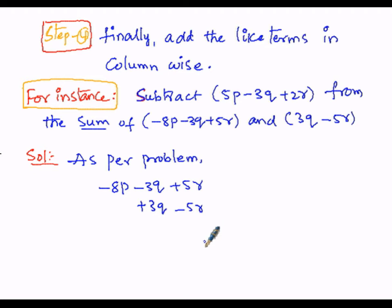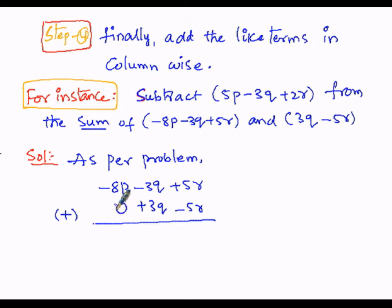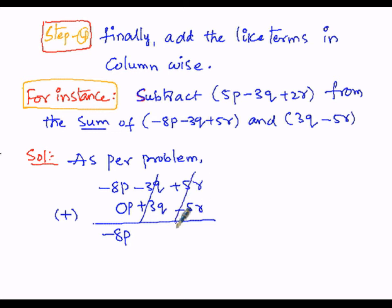The q and r terms are kept column-wise as like terms. Since p is missing in the second expression, we write 0p. Adding column-wise: −8p remains; −3q + 3q = 0, so q cancels; +5r − 5r = 0, so r cancels. The resultant sum of the two expressions is −8p.